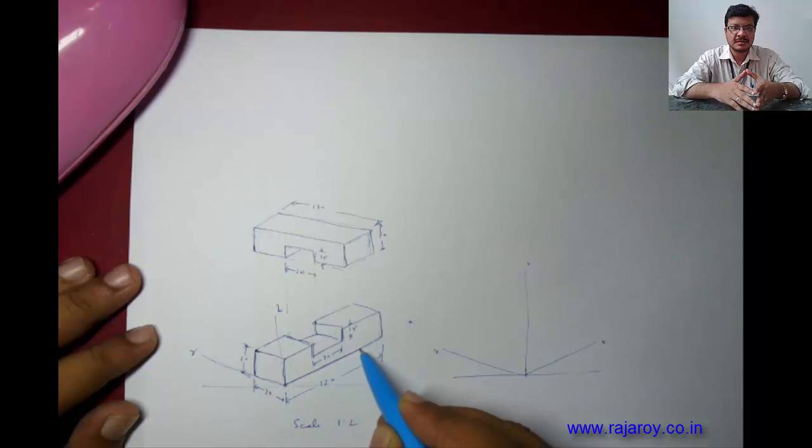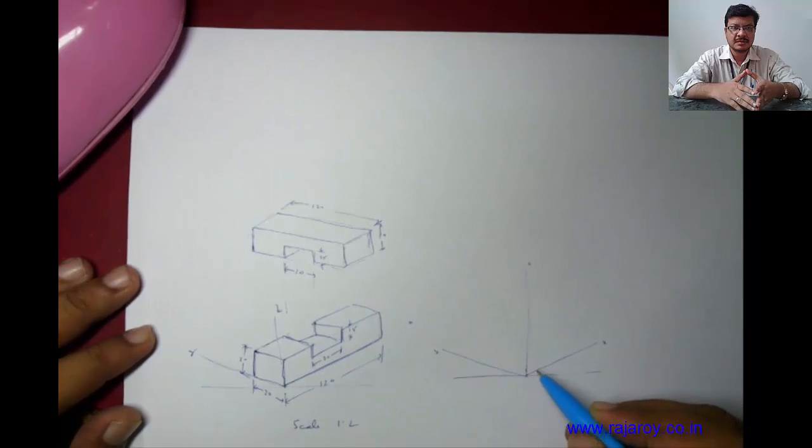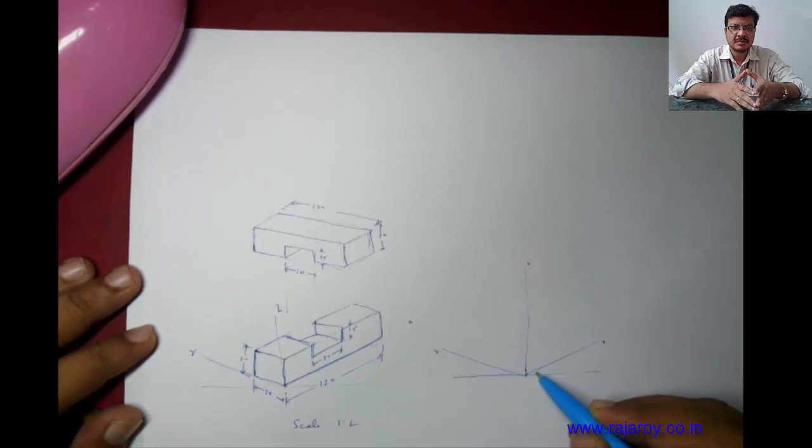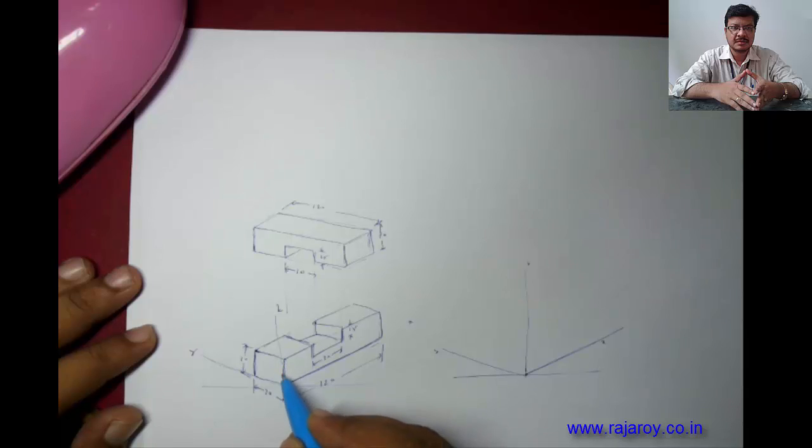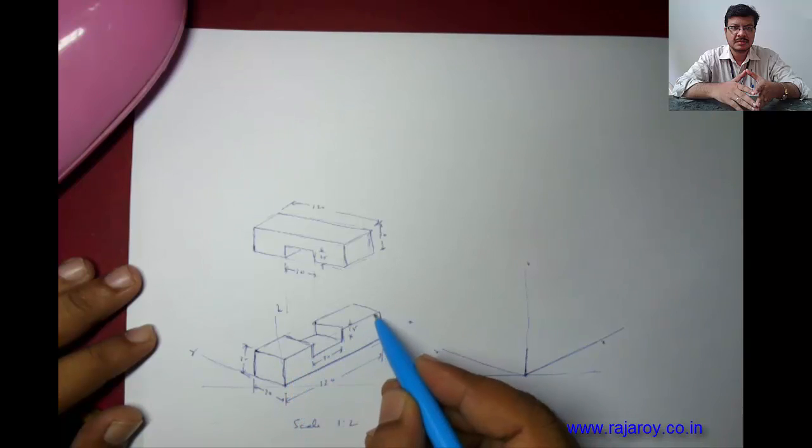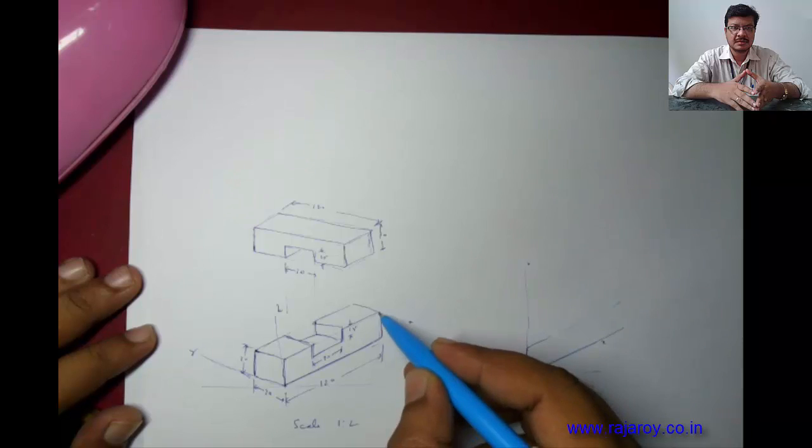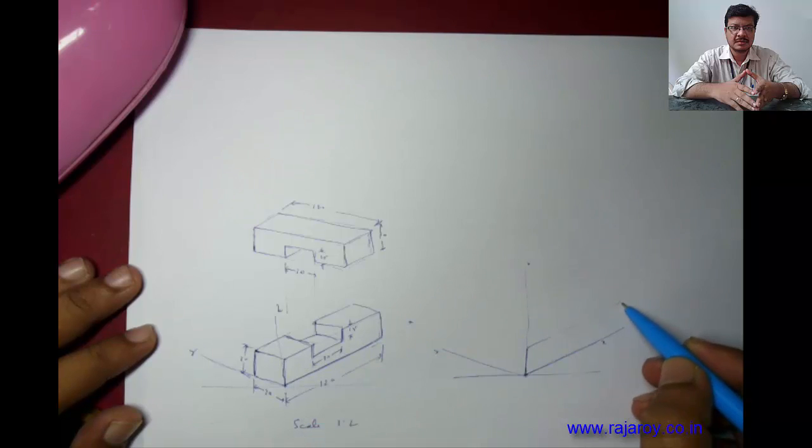Now this particular line is along x-axis. Align your mini-drafter to x-axis and draw a 120mm long line like this. Now this line is parallel to z. Again align your mini-drafter to z-axis, draw a line parallel to z of 30 length. Now this line is again parallel to x. Change the orientation of mini-drafter to x-axis, draw a 120 degree line.